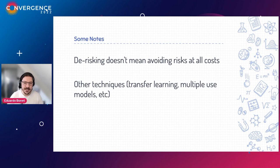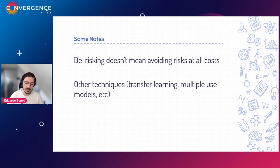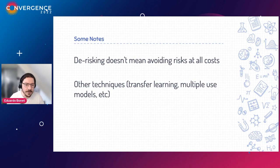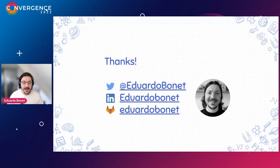Some final notes: de-risking doesn't mean avoiding risk at all costs. Sometimes you have to start with machine learning — it might be the only choice when data volume is too large for heuristics, the problem is too complex, or your team already has that expertise. Other techniques for de-risking machine learning include transfer learning from existing or publicly available models for your specific use case, or creating a model that addresses multiple use cases. But those are topics for another time.